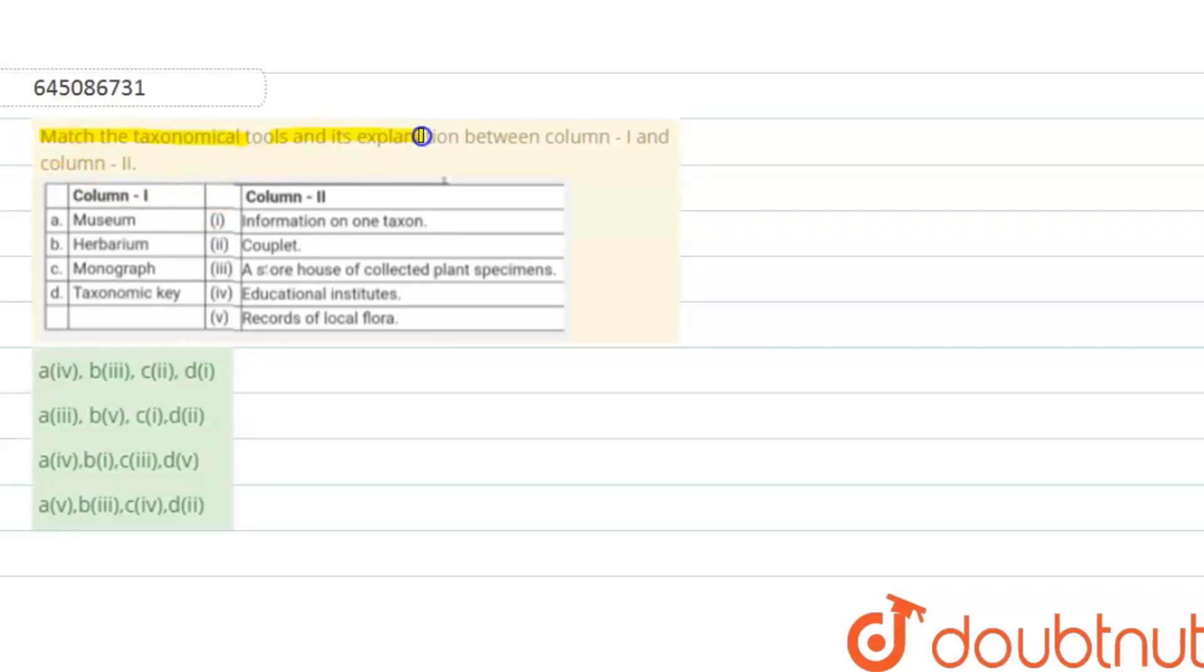Match the taxonomical tools and their explanation between column 1 and column 2. We have column 1 in which taxonomical tools are given and column 2 with their explanations. We have to match them with the correct options.